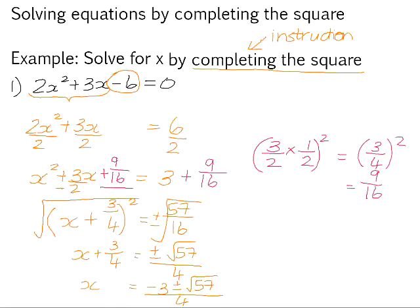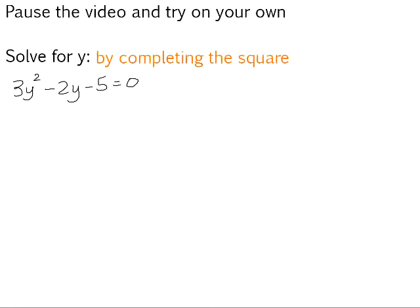There is an example in your homework book I'd like for you to try and solve that question by completing the square. 3y squared minus 2y minus 5.